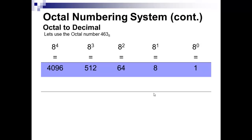The values are: eight to the zero is one, eight to the first is eight, eight to the second is sixty-four, eight to the third is five-twelve, eight to the fourth is four-thousand ninety-six. Notice each value is multiplied by the base eight — since this is base eight, each column is eight times the previous one.